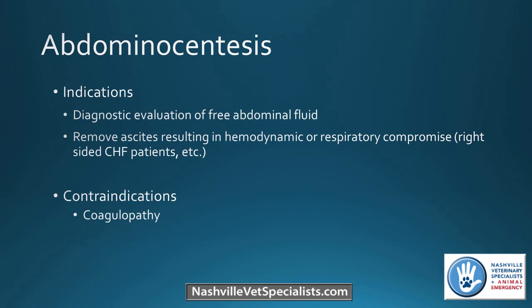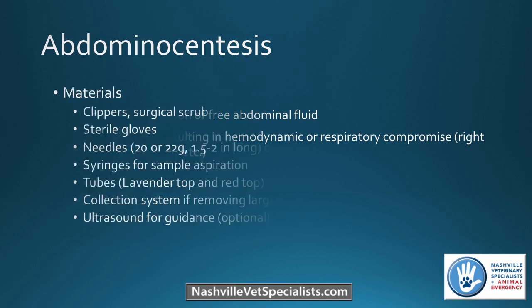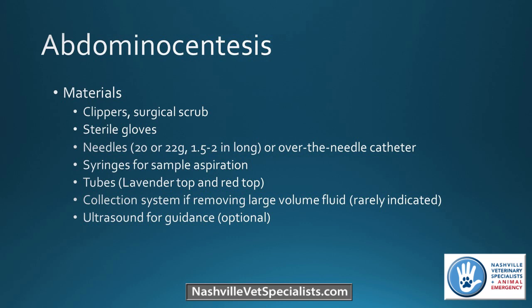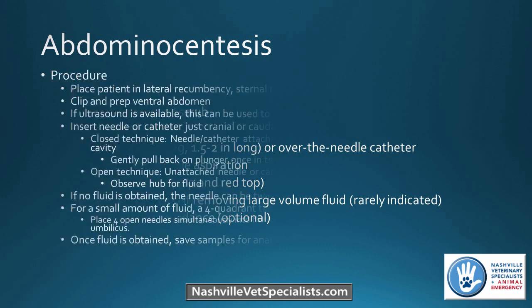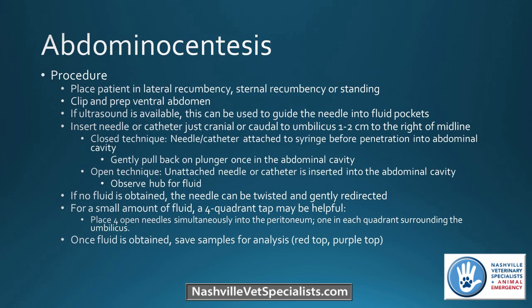The real contraindication would be a coagulopathy, but for the most part there's no reason not to sample fluid you see in the abdomen. Materials are similar to other procedures — get tubes for collection, and if removing large volume, set up your extension set like for thoracocentesis. Ultrasound guidance is ideal but not required. The patient can be in any position — lateral, sternal, or standing. Clip and prep the ventral abdomen. Without ultrasound, try a blind poke cranial or caudal to the umbilicus, about two centimeters to the right of midline.